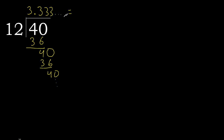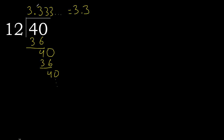40 divided by 12 is — after the decimal point, 3 repeating. The answer is 3.333... repeating. Finish.